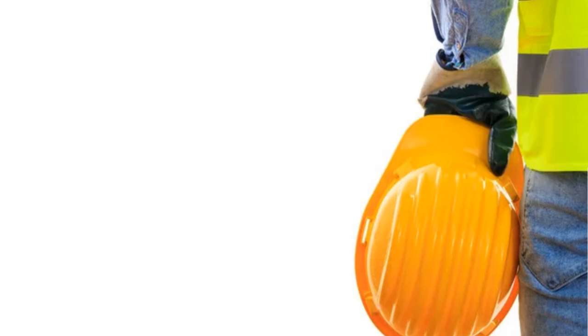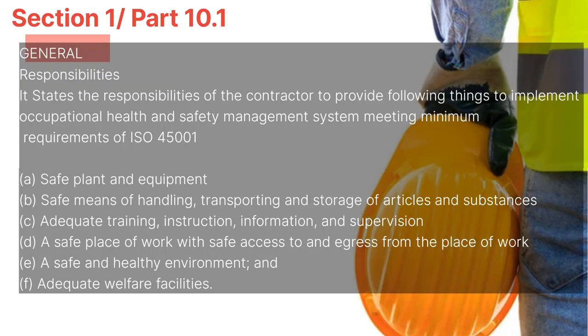Let's go through Part 10 of Section 1 of QCS. Section 1, Part 10.1 General Responsibilities states the responsibilities of the contractor to implement an occupational health and safety management system meeting the minimum requirements of ISO 45001.